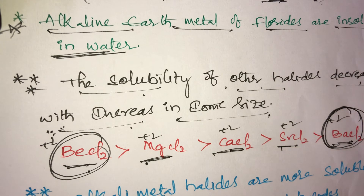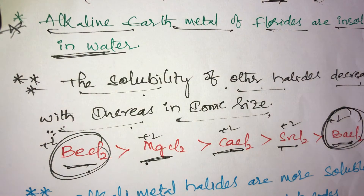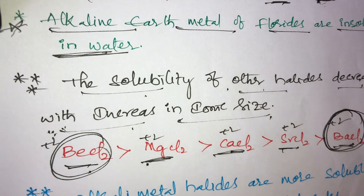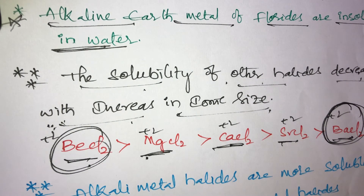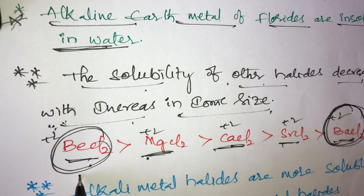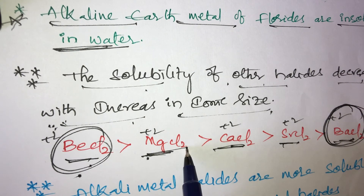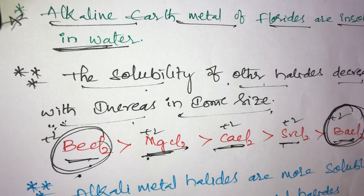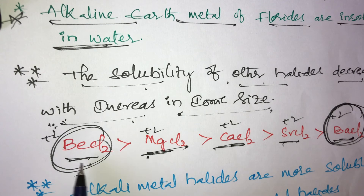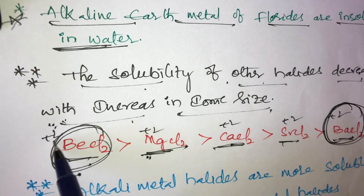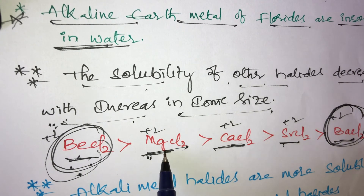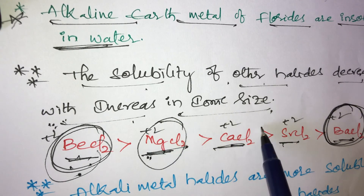In alkaline earth metals, all fluorides are insoluble in water, but other halides are soluble. Solubility depends on ionic size — if ionic size is more, that is least soluble; small size means highly soluble. Example: BeCl₂ > MgCl₂ > CaCl₂. This is the solubility order of halides for Group 2A elements.